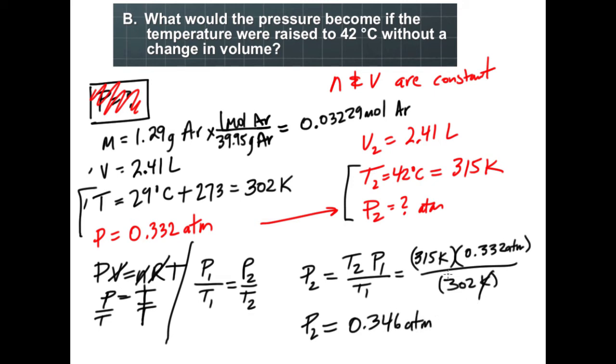I know it's atmospheres because the unit of temperature drops out. Double check—think about the logic. What's happening to temperature? Temperature is going up from 302 to 315. If pressure and temperature are directly proportional, my pressure should go up. Does it? I go from 0.332 to 0.346, so yes, we do see it go up.